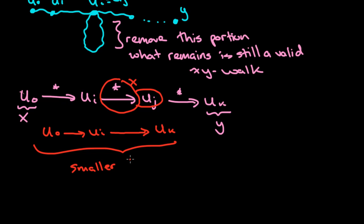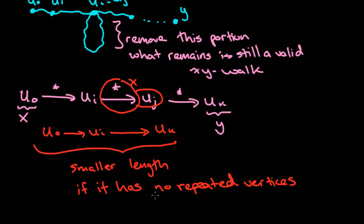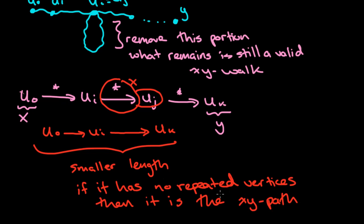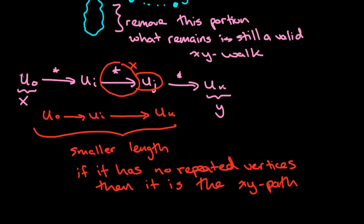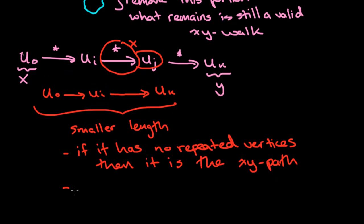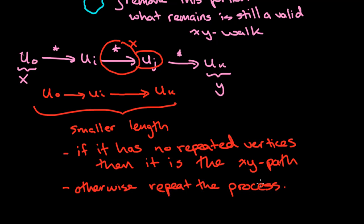If the reduced walk has no repeated vertices, then it is in fact a path — the XY path we've been searching for. But if it does have repeated vertices, we repeat this process exactly again. We keep repeating the process until what we have has no repeated vertices, and that is the XY path we're looking for.